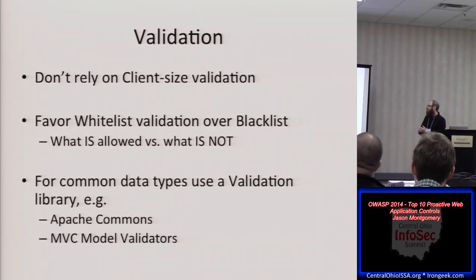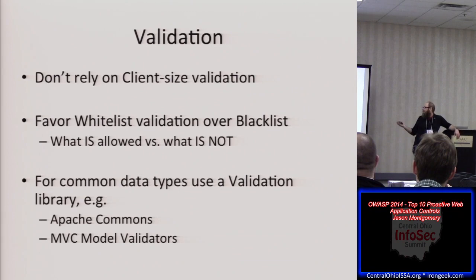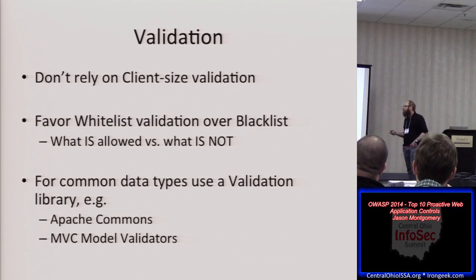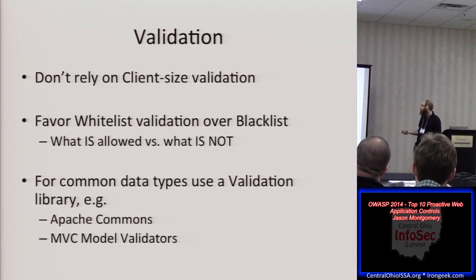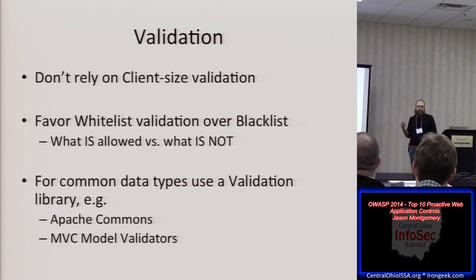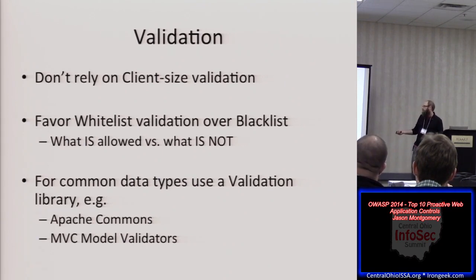Favor whitelist validation over blacklists. A whitelist focuses on what is allowed rather than filtering out bad things. It's hard to filter everything because there are so many encodings with UTF-8, 16, and so on. It's easier to narrow it down and say only these roughly 80 characters are allowed, then throw everything else out. For common data types, use a validation library — Apache Commons has some, and .NET MVC has model validators. These have already figured out how to validate emails, credit cards, etc. You don't have to keep rewriting that code.